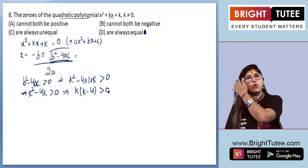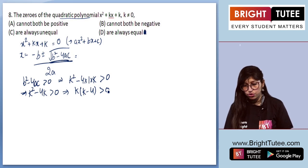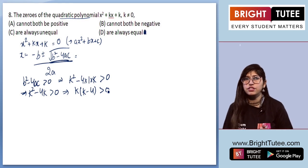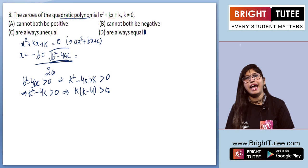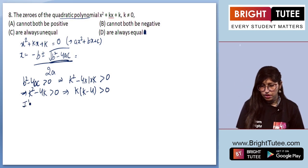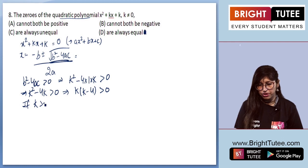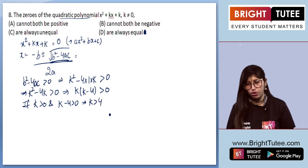Now, since k(k − 4) > 0, the product of these two expressions must be positive. This is possible only if both k and (k − 4) are positive, or both are negative. If both are positive: k > 0 and k − 4 > 0, which means k > 4.